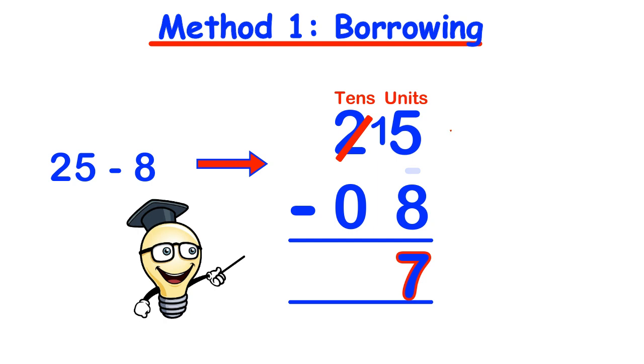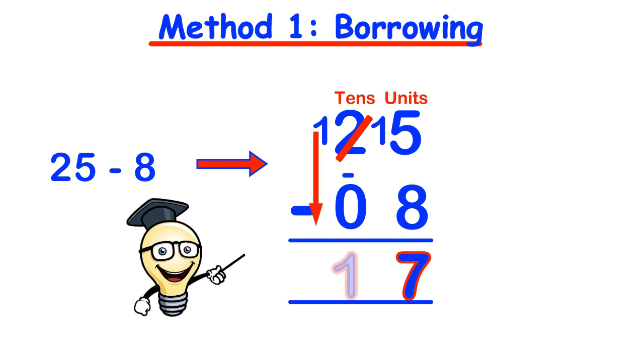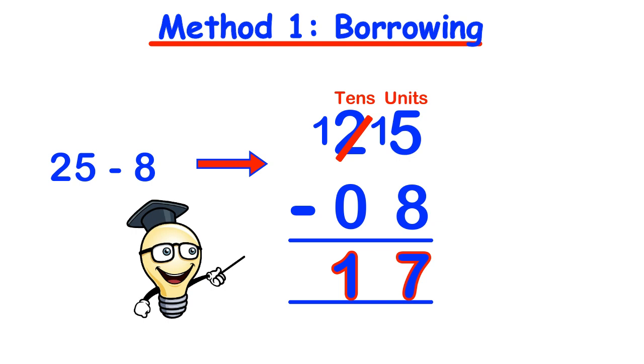So 15 take away 8 equals 7. And then we can move on to the tens column, where we just have 1 left now. Subtracting down, so 1 take away 0 is just 1. So the answer becomes 17.